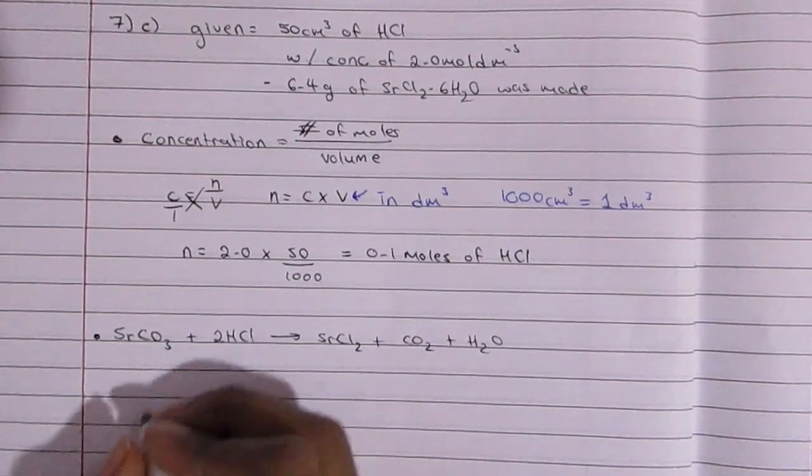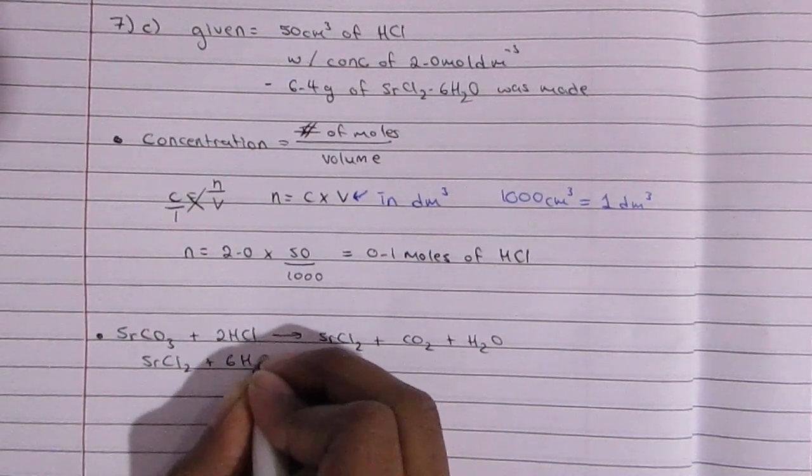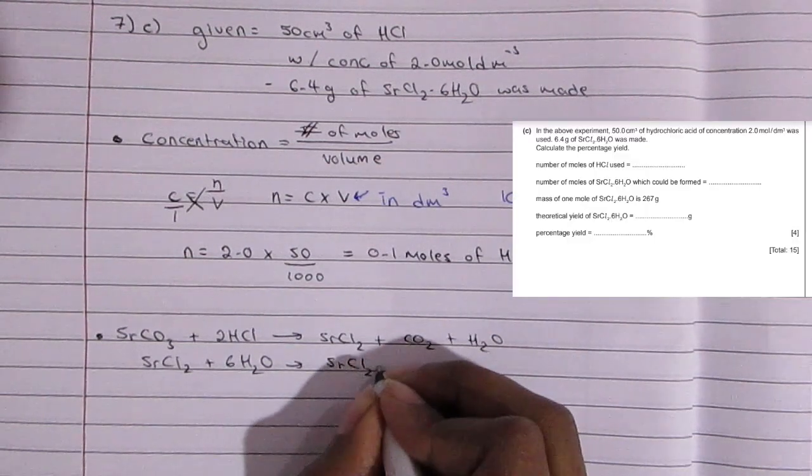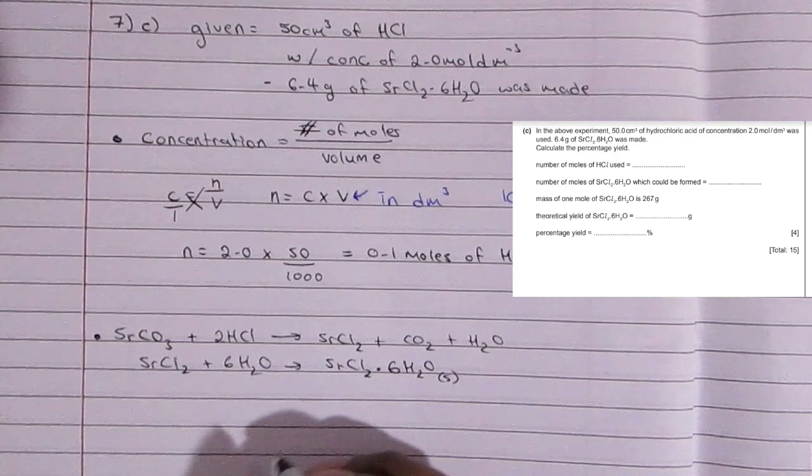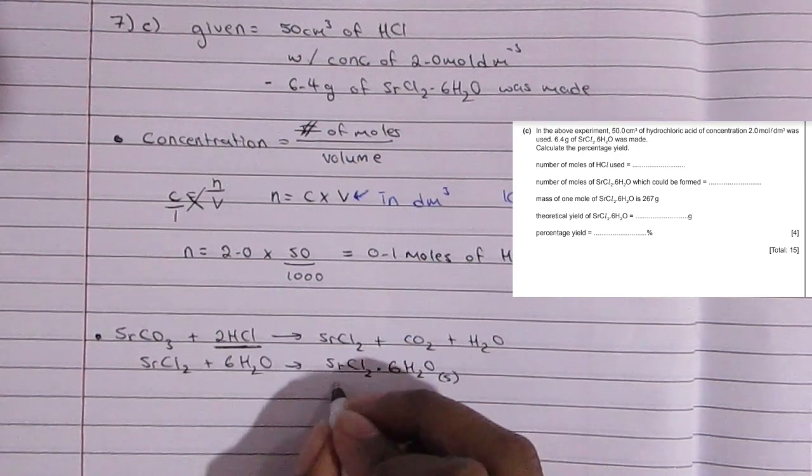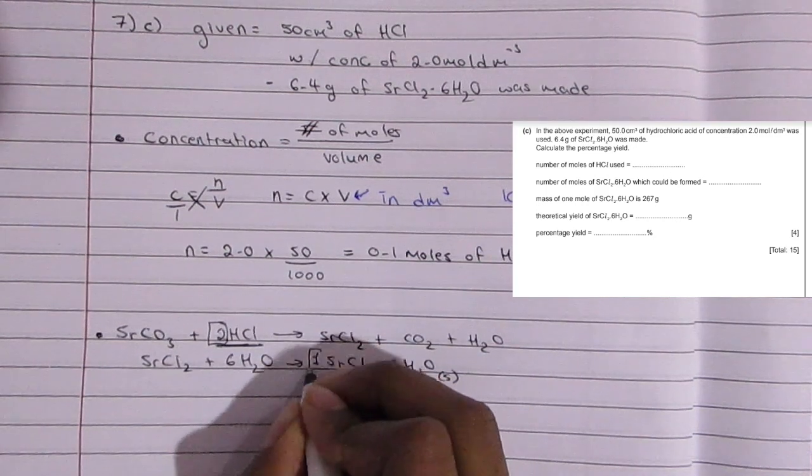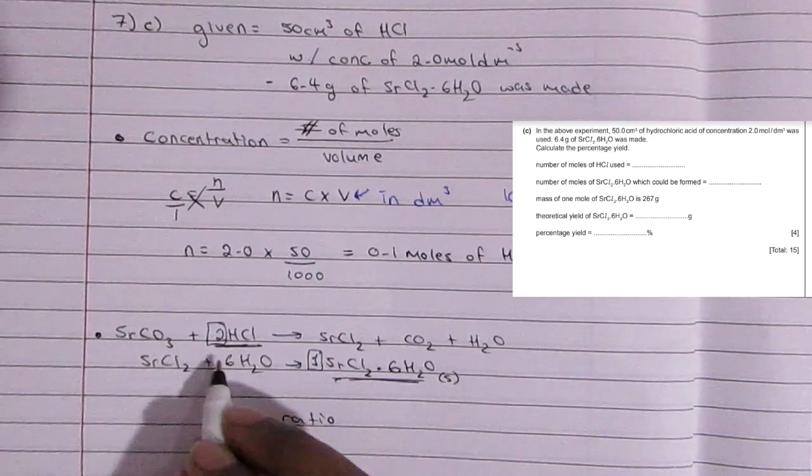So there's two HCl's that are used, right, so you're going to use the coefficient. And then for the strontium chloride hexahydrate it's only one. Of course when there's no number written next to the compound that means it's a one. So the ratio is 2 to 1.